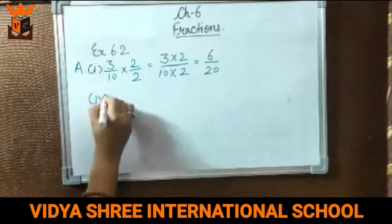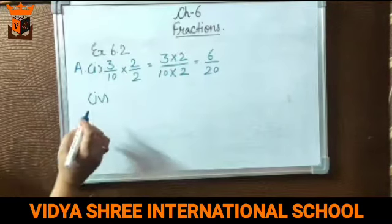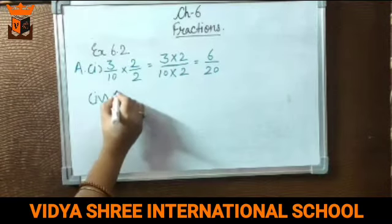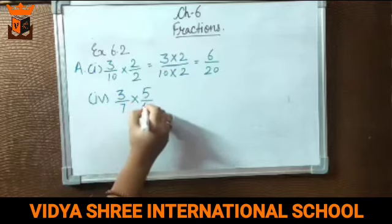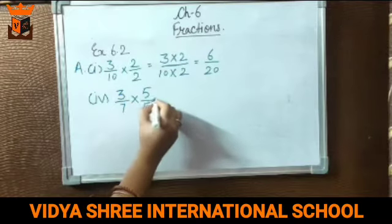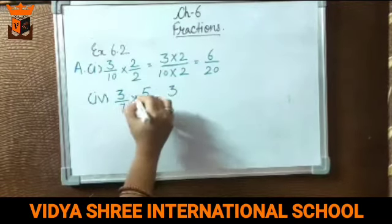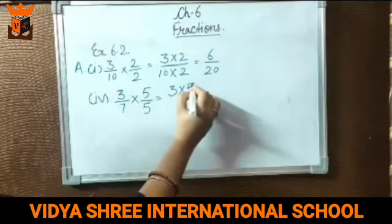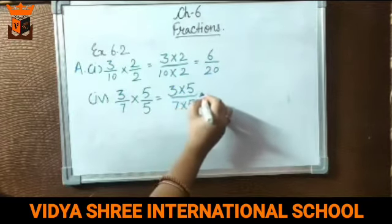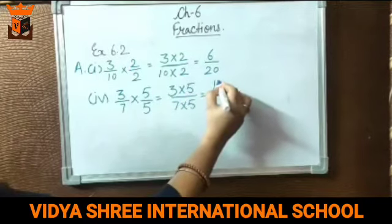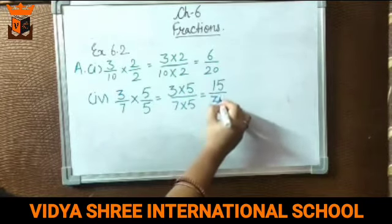Taking another question, the fourth one: 3 by 7 multiplied by 5 by 5. You have to write 3 multiplied by 5, and 7 multiplied by 5. 5 threes are 15, and 7 fives are 35. So the equivalent fraction is 15 by 35.